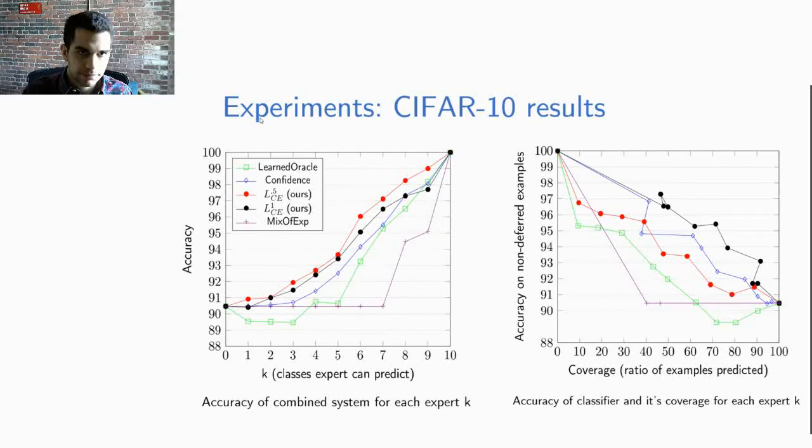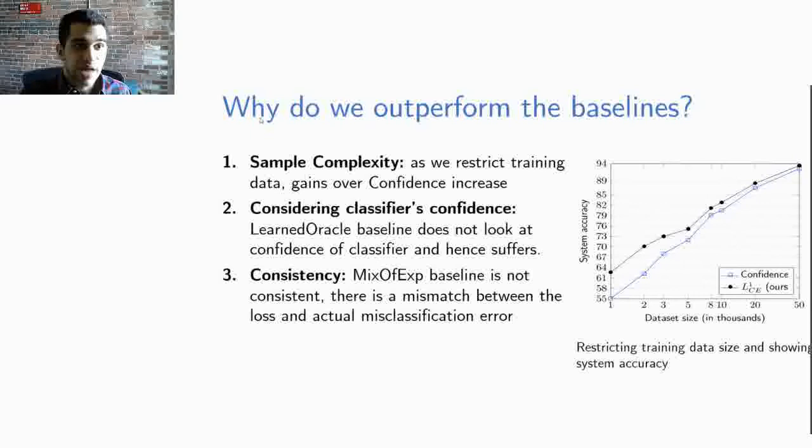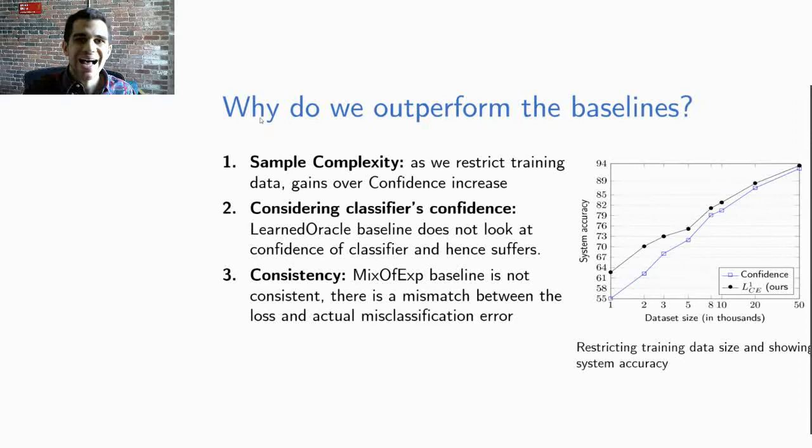So given the results why do we outperform the baselines? The first reason is that of sample complexity. In the figure on the right we're plotting on the x-axis the training data set size and on the y-axis the system accuracy. As we restrict the training data set size our gains over the confidence baseline improve by a factor of 3 and 4.